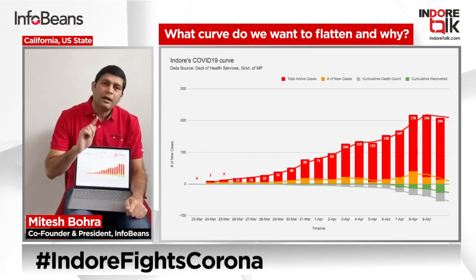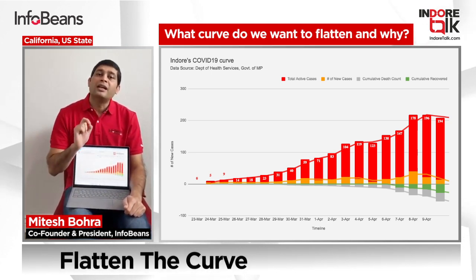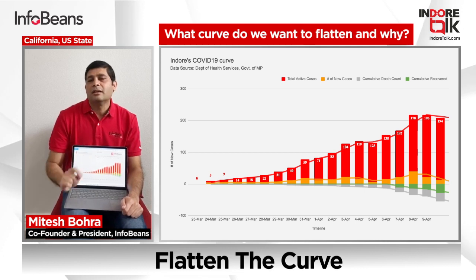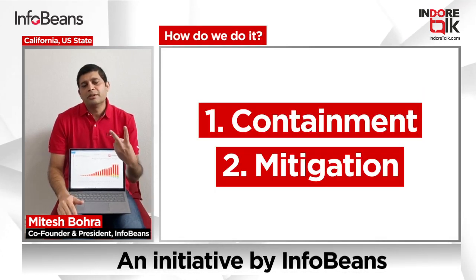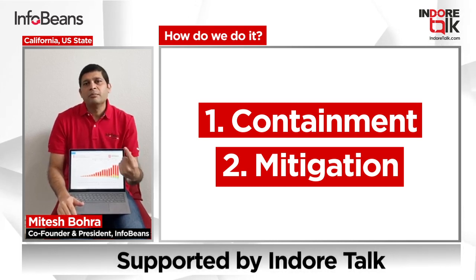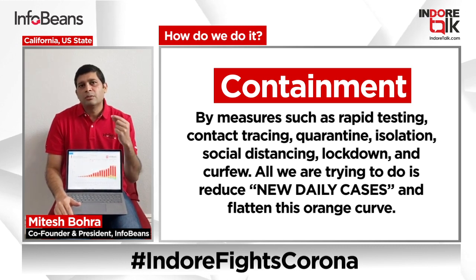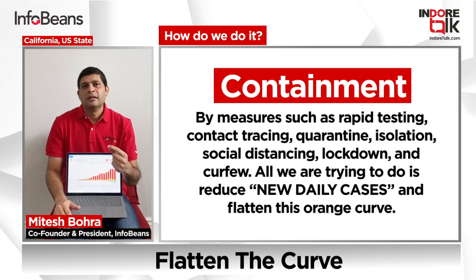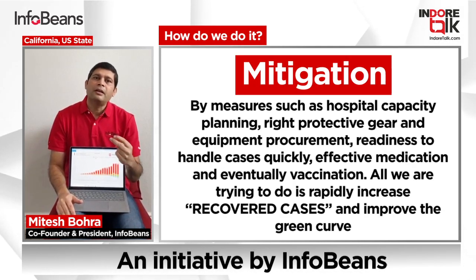And we want to grow as soon as possible this green curve, which is recovery — we want to recover. What do we need to do? Two simple things: containment and mitigation. Containment is social distancing, government lockdown, curfew, living in our homes, quarantine, isolate. Mitigation is our hospital systems and healthcare response.